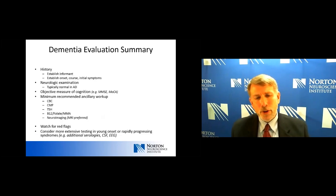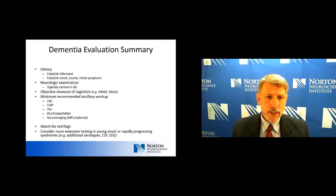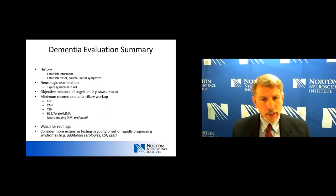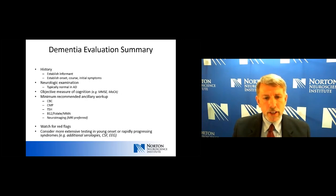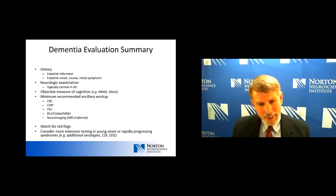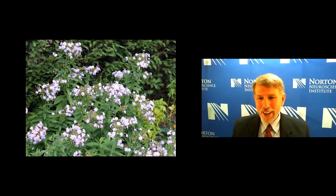To summarize: the most important thing is the history — establish the onset, course, and initial symptoms, and really need an informant. The exam is typically normal in Alzheimer's disease. We need some objective measure of cognition, which can be as simple as the MMSE or MoCA. And the minimum ancillary workup includes blood work and brain MRI. Watch for red flags: with rapidly progressing or early onset dementia, consider additional testing including blood work, spinal fluid, and EEG. Thank you all very much.